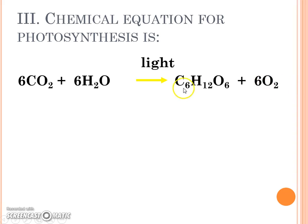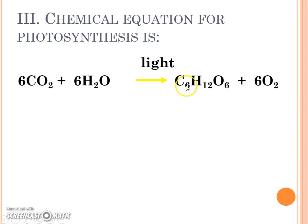The numbers written below the letters are called subscripts — sub for below. So that six needs to be below the C and the H. That is the number of each type of atom within the molecule. Within the sugar glucose there are six carbons, twelve hydrogens, and six oxygens. That's what the subscript numbers mean.